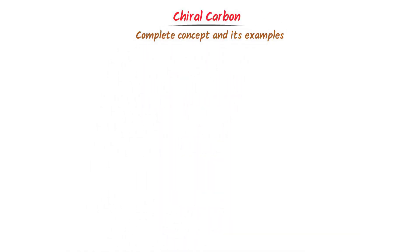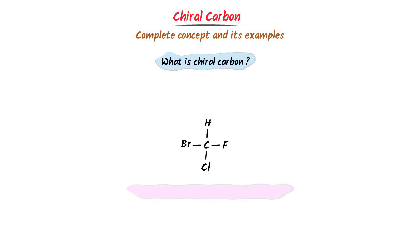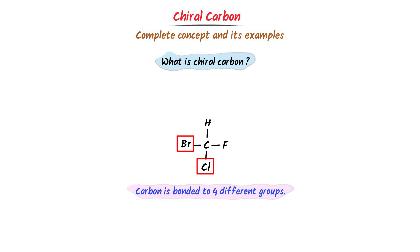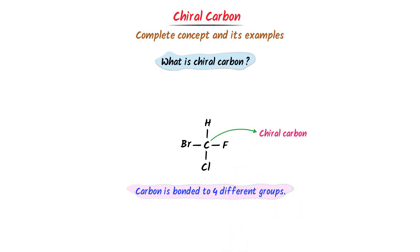Chiral carbon. I will teach you the complete concept and examples of chiral carbon. Now, what is chiral carbon? Consider this organic compound. Here, carbon is bonded to four different groups — carbon is bonded to bromine, carbon is bonded to chlorine, carbon is bonded to fluorine, and carbon is bonded to hydrogen. Thus, this carbon is called chiral carbon because it is bonded to four different groups.